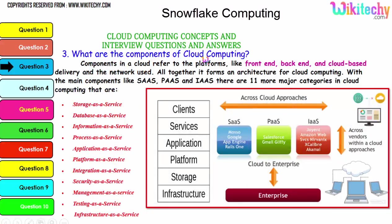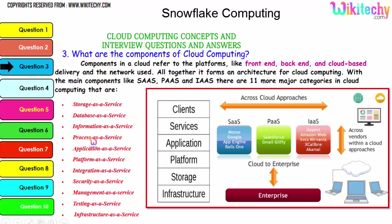Now let's talk about the components of cloud computing. Components in a cloud refer to platforms like front-end, back-end, cloud-based delivery, and the network used. Together they form an architecture for cloud computing with the main components: Software as a Service, Platform as a Service, and Infrastructure as a Service. There are 11 major categories in cloud: storage as a service, database as a service, information as a service, process as a service, application platform, integration, security, management, testing, and finally infrastructure.